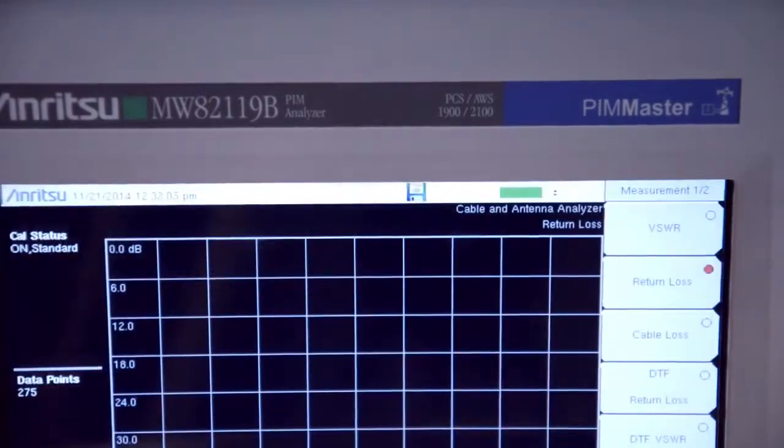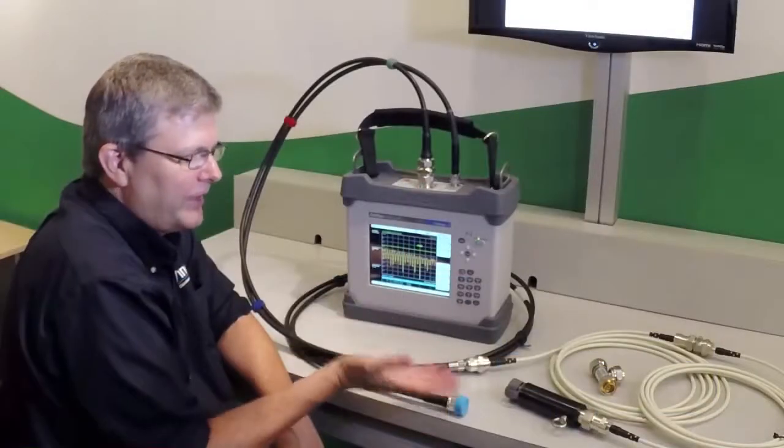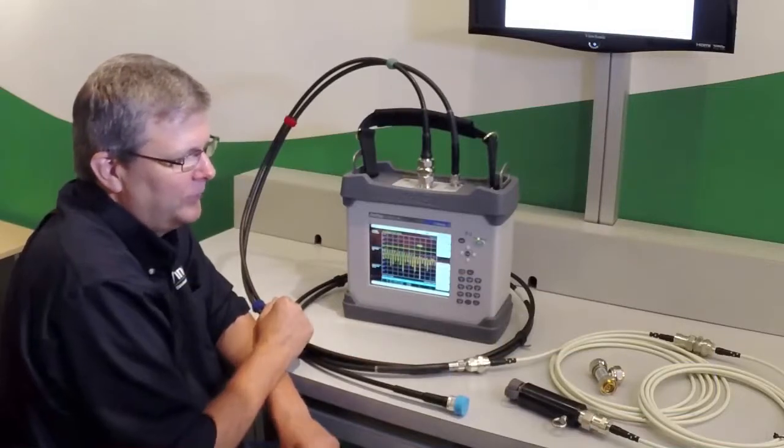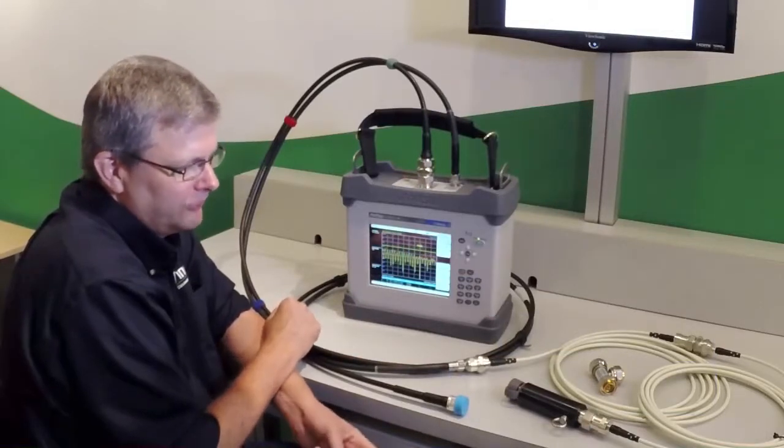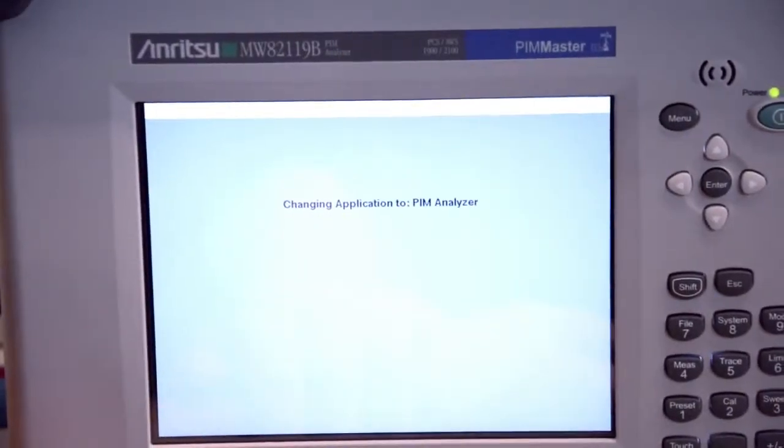So very quickly, we've been able to, using the cable and antenna analyzer function of the PIM master, verify that we have a site that's passing both the cable loss measurement, the distance to fault measurement, as well as the return loss measurement. The next step is now to proceed to PIM testing.